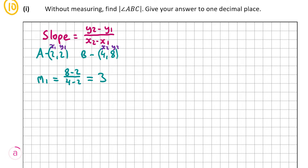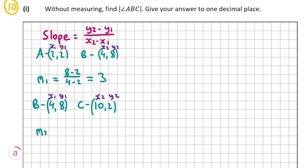Now we have to find the slope of BC. B again is (4, 8), and C is (10, 2). So X1, Y1 is (4, 8) and X2, Y2 is (10, 2). The slope of BC, M2, is equal to 2 minus 8 over 10 minus 4. And 2 minus 8 is minus 6, so minus 6 over 10 minus 4, and 10 minus 4 is 6. So minus 6 over 6 is minus 1.